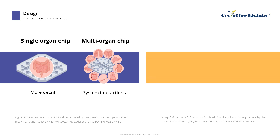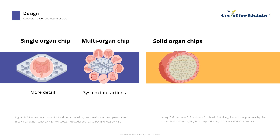The next design consideration is deciding how to form functional organization within the OOC. Although there are many variations of OOC device architectures, they can generally be divided into two categories. The first category includes solid organ chips, in which cells are cultured as 3D tissue pieces that can interact with each other and the culture medium in defined ways. Examples include micro-pillars and micro-well arrays commonly used in liver, tumor, heart, and adipose OOCs.